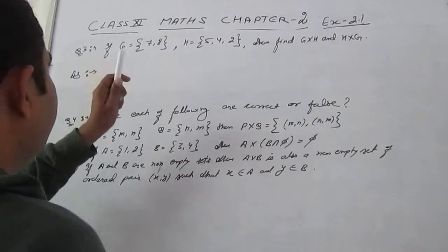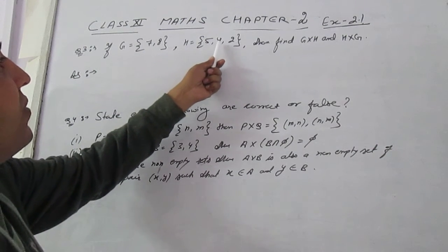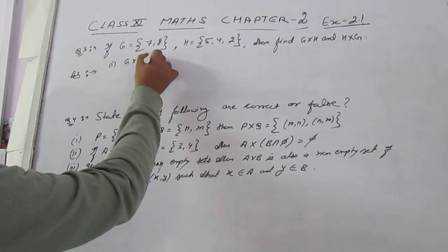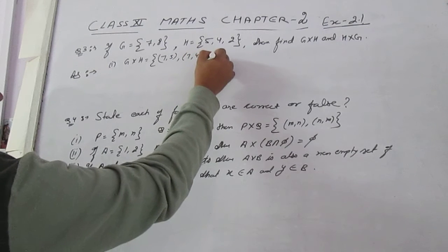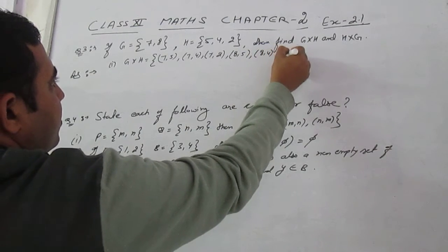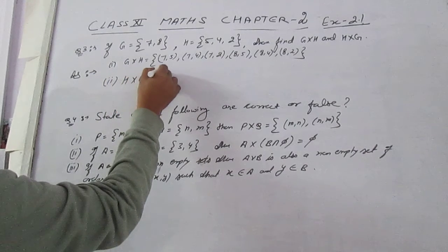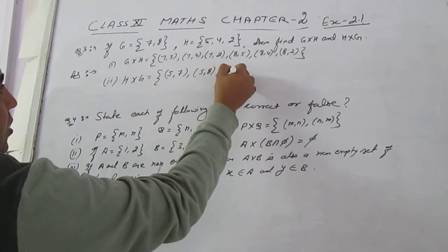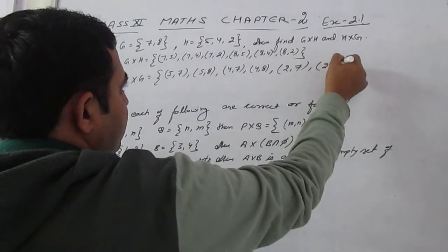Exercise 2.1, Question 3: If G = {7, 8} and H = {5, 4, 2}, find G cross H and H cross G. G cross H = {(7,5), (7,4), (7,2), (8,5), (8,4), (8,2)}. H cross G = {(5,7), (5,8), (4,7), (4,8), (2,7), (2,8)}.